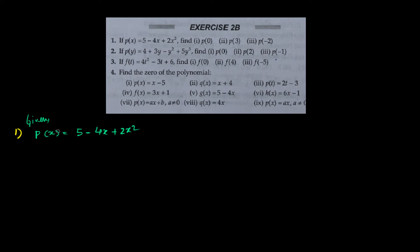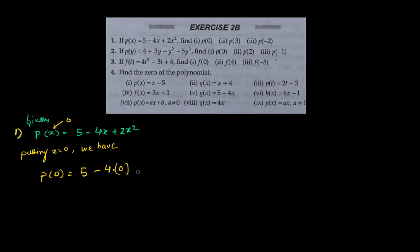We'll find p(0) by putting x equals to 0 in the polynomial. Each and every x is replaced with 0, so it becomes 5 minus 4 times 0 plus 2 times 0 squared, which gives 5 minus 0 plus 0. The answer is 5.